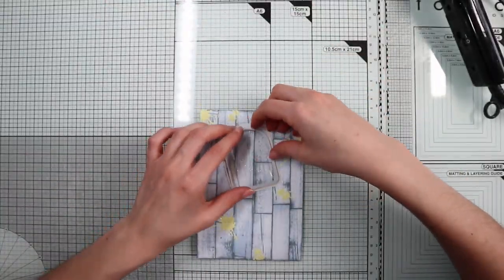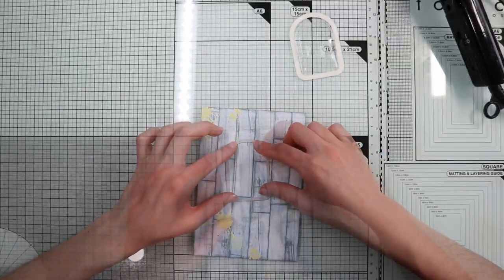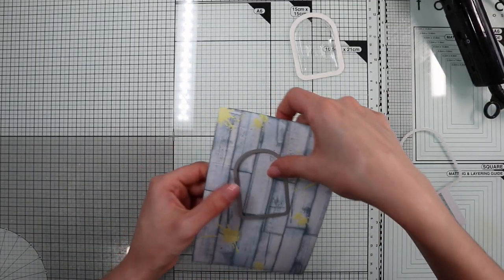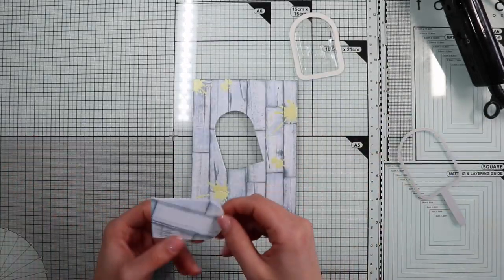Before continuing to add details in the background, I proceed to die-cut the ice cream shake window, using the medium die of the set.